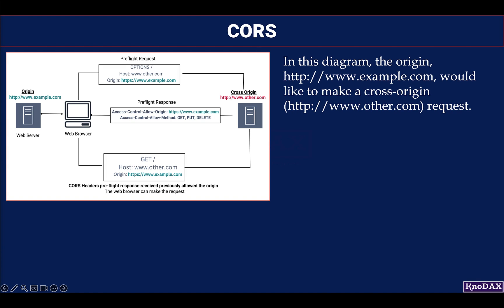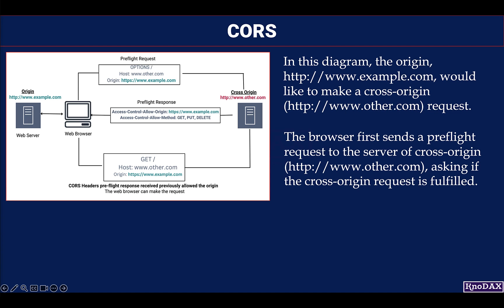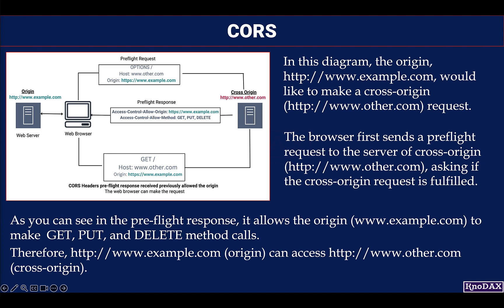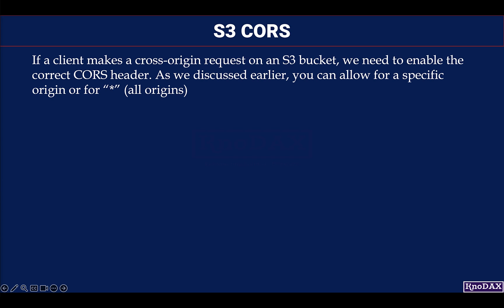In this diagram, the origin http://example.com would like to make a cross-origin request to http://other.com. The browser first sends a preflight request to http://other.com asking if the cross-origin request is allowed. In the preflight response, other.com allows example.com to make GET, PUT, and DELETE method calls. Therefore, example.com can access other.com, completing the cross-origin request.